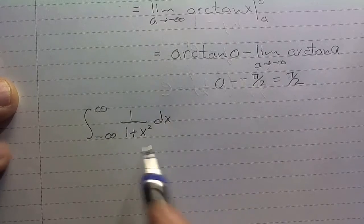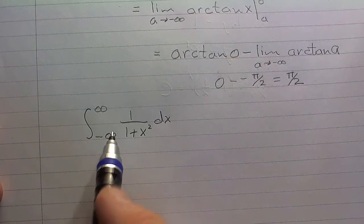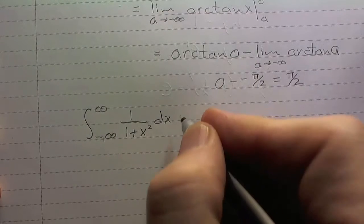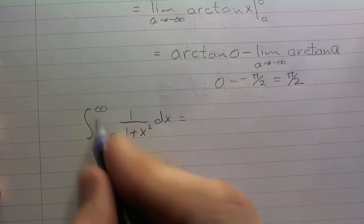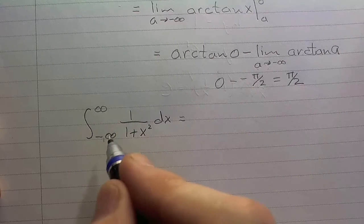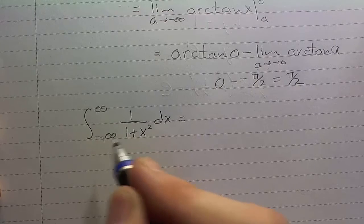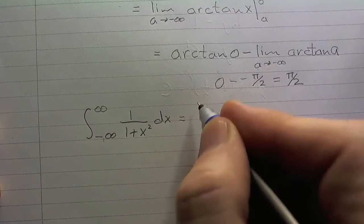Okay? So how do we deal with that? So we've got both places where we have infinity. So here's what we do. We immediately pick a number in between here. Something in between negative infinity and infinity where the function is defined, and we break this up into two integrals. So like this.